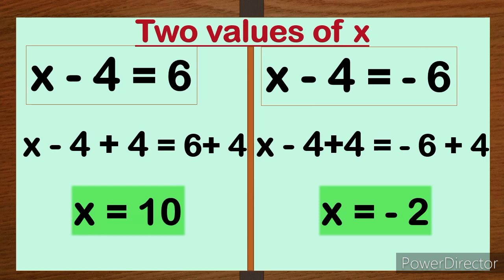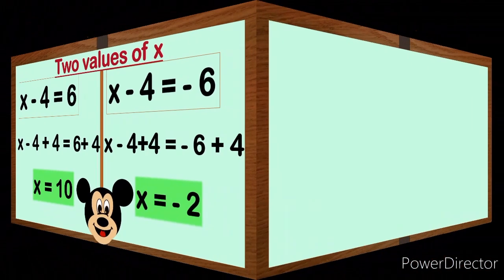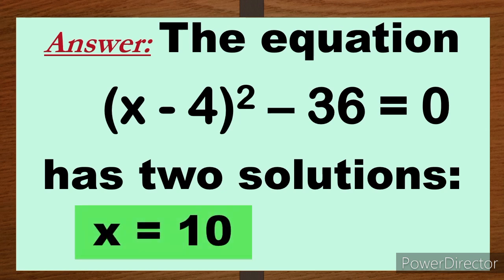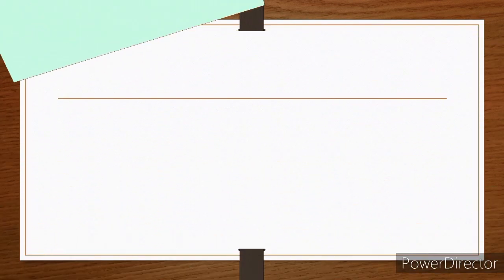Those are the two values of x. The answer is: the equation (x - 4)² - 36 = 0 has two solutions, that is x = 10 or x = -2.